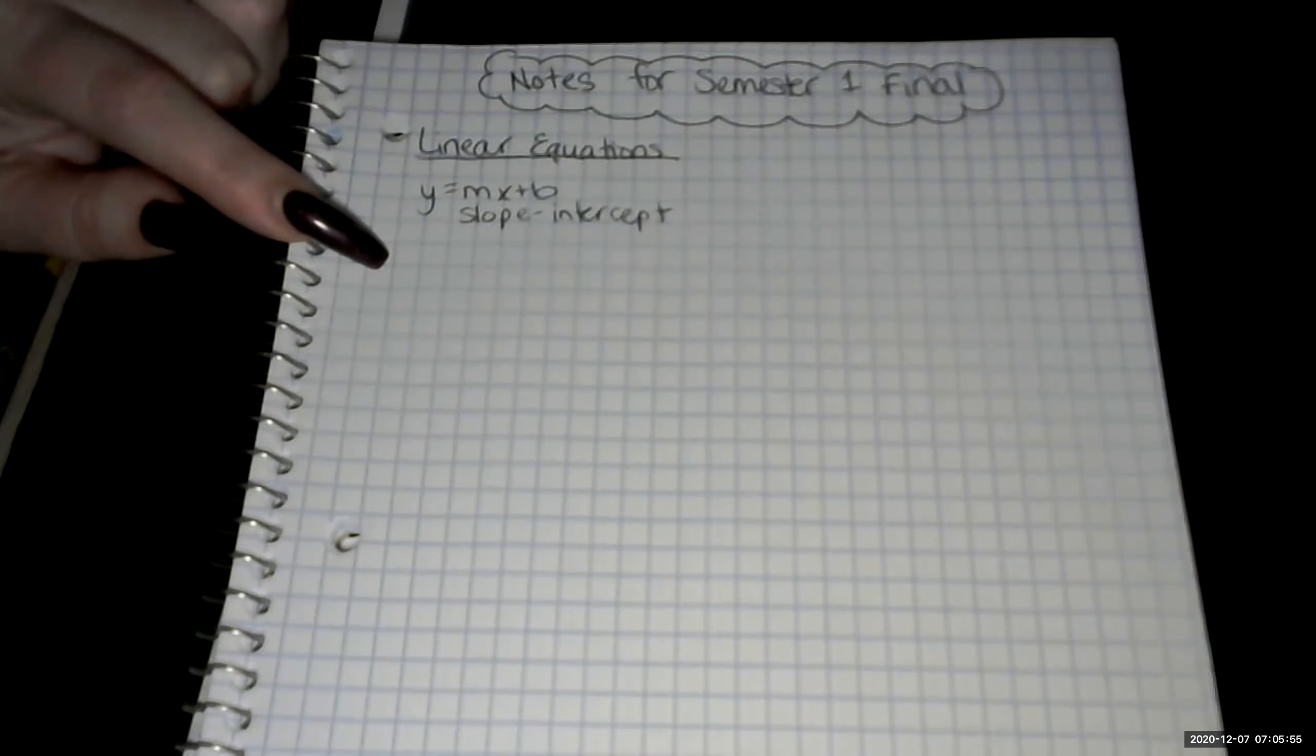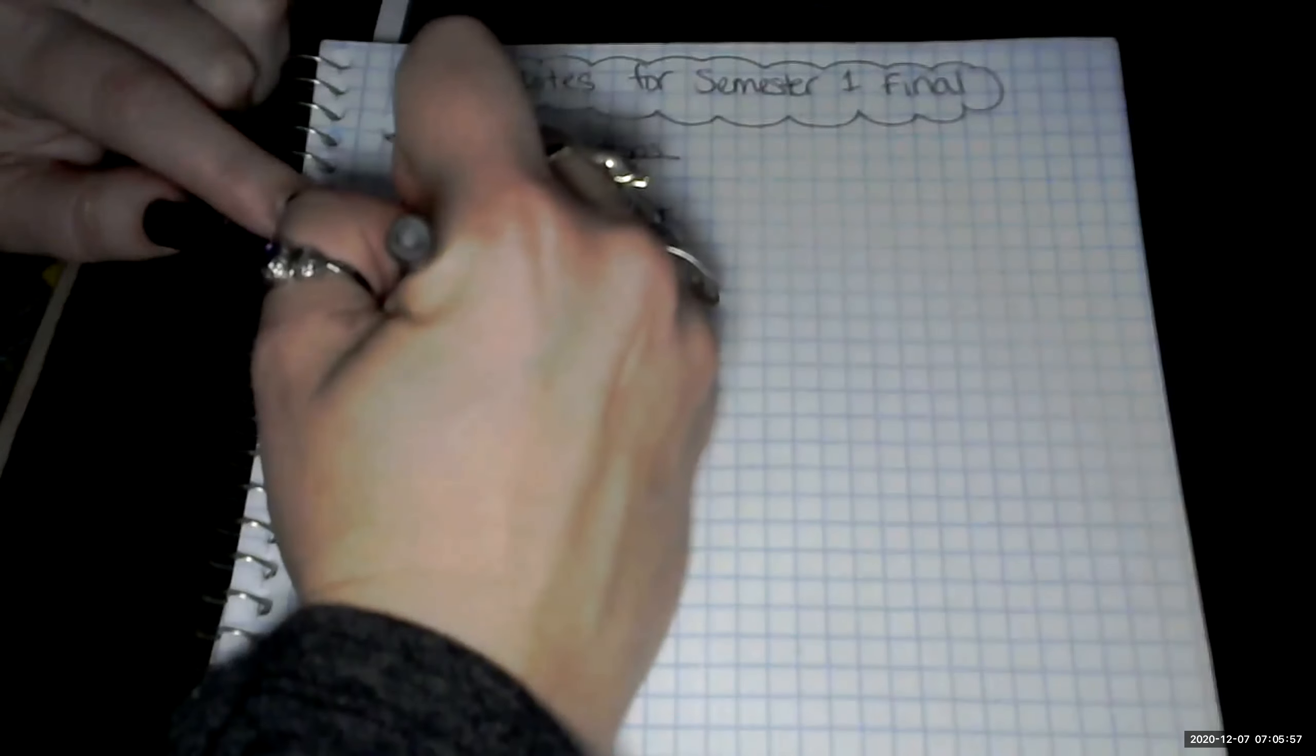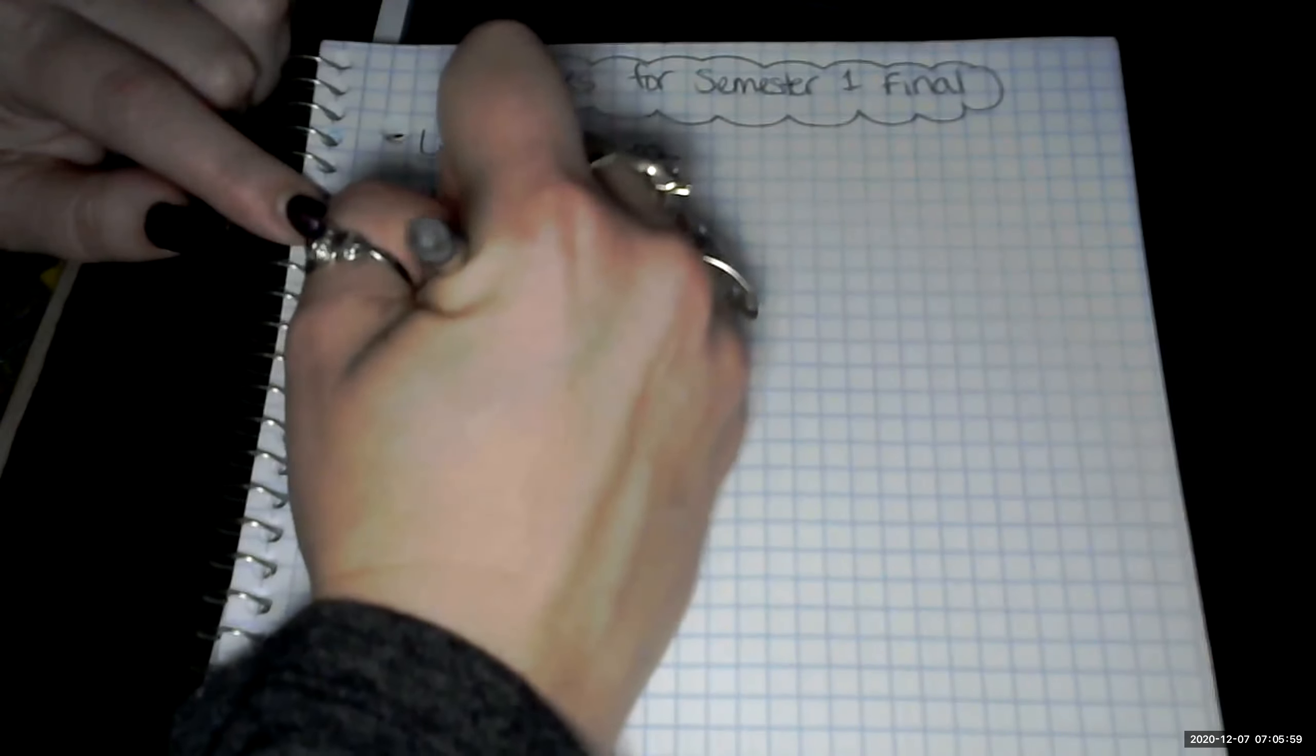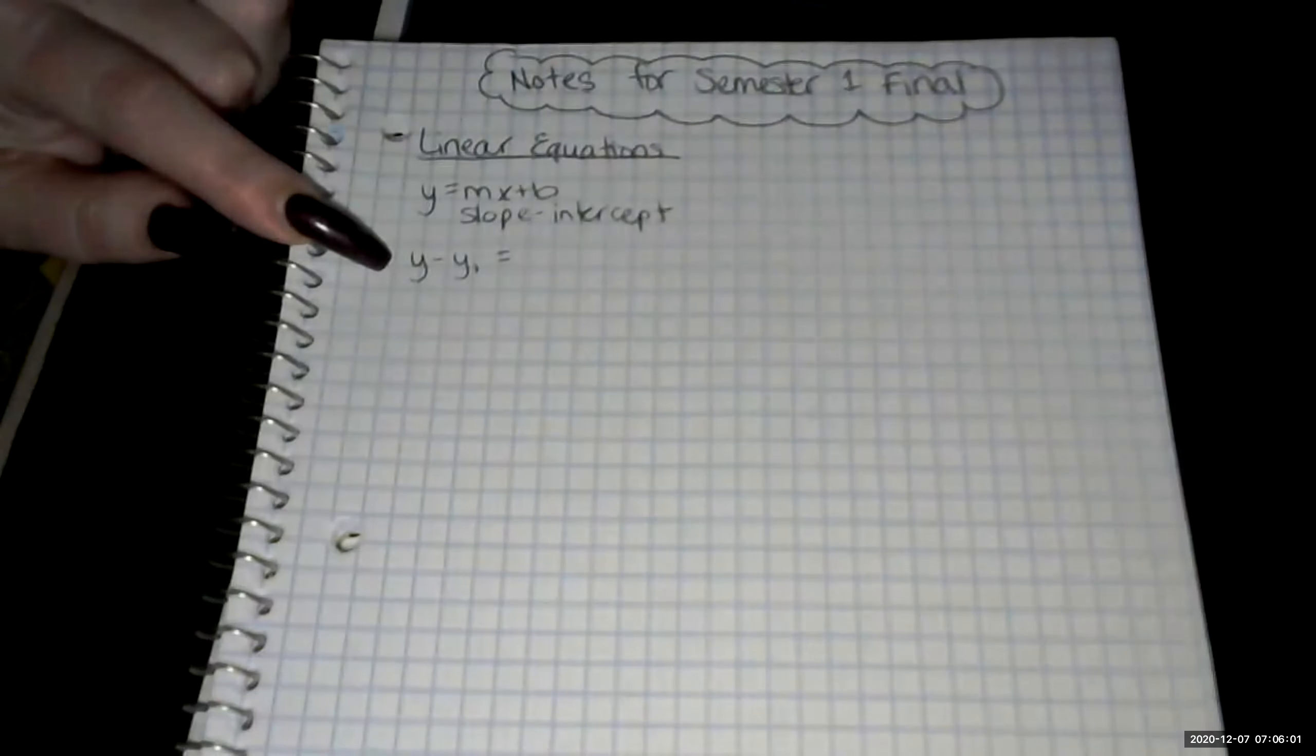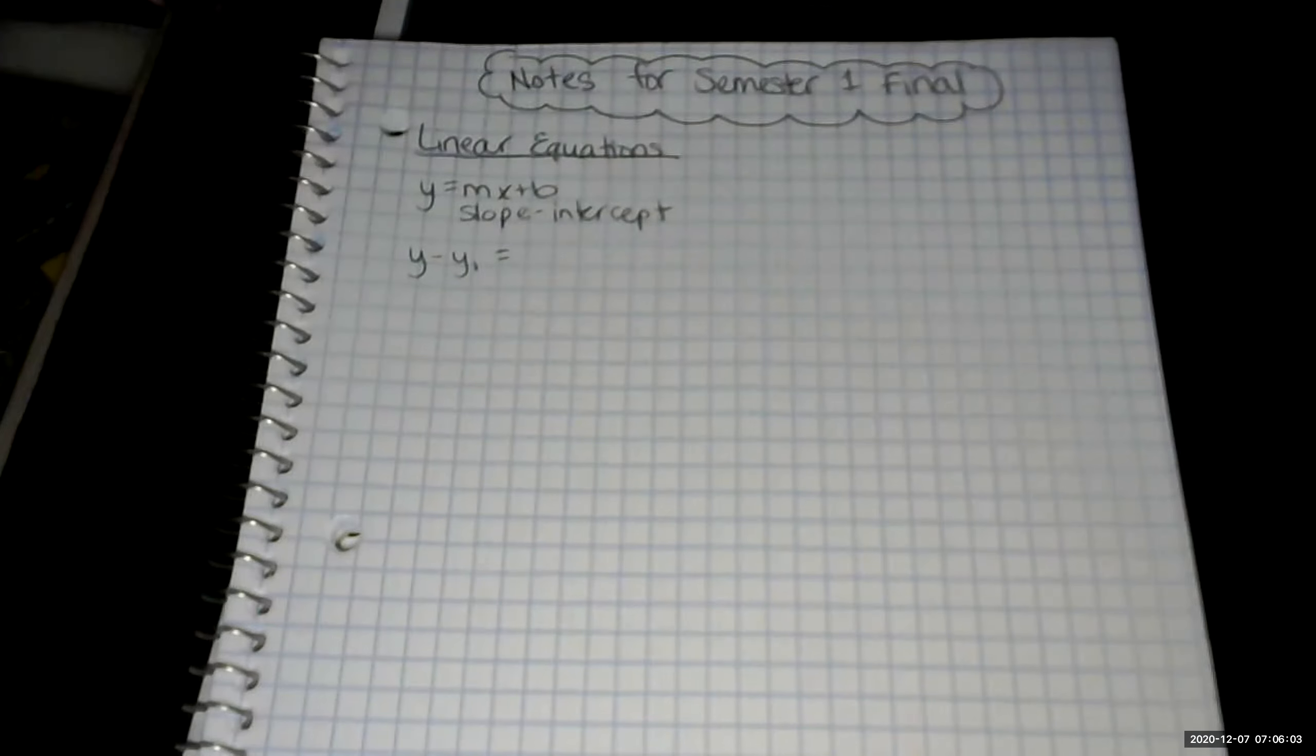We also did point slope, which was y minus y1. Remember, the y1 and the x1 are ordered pair, a point.